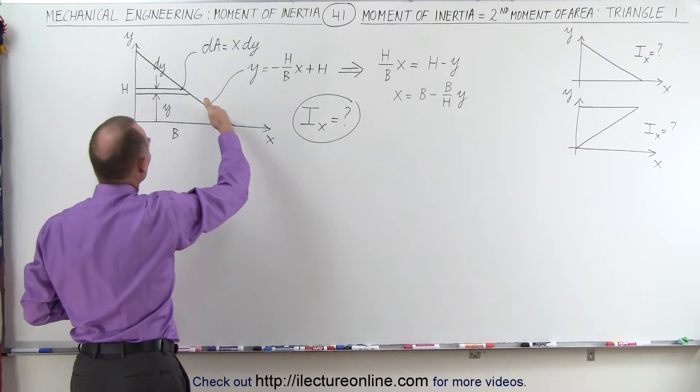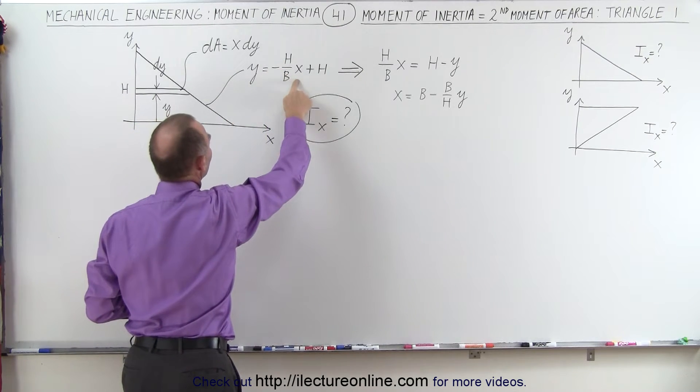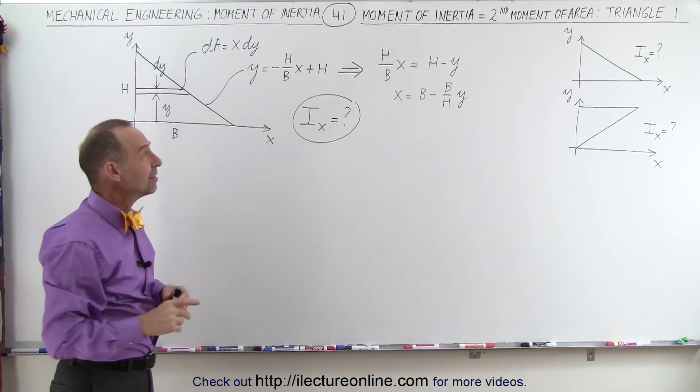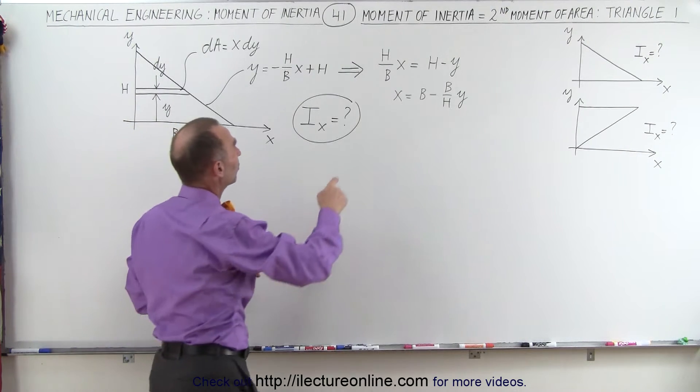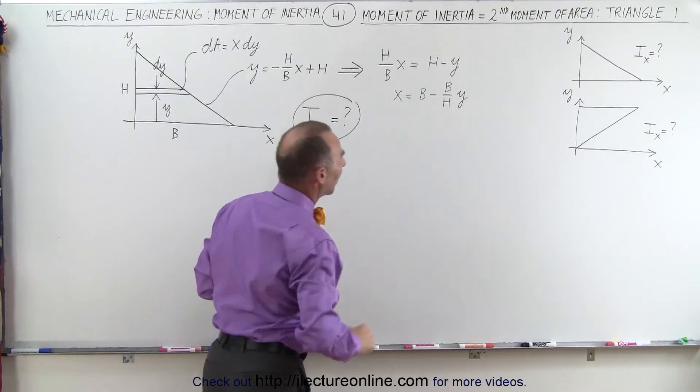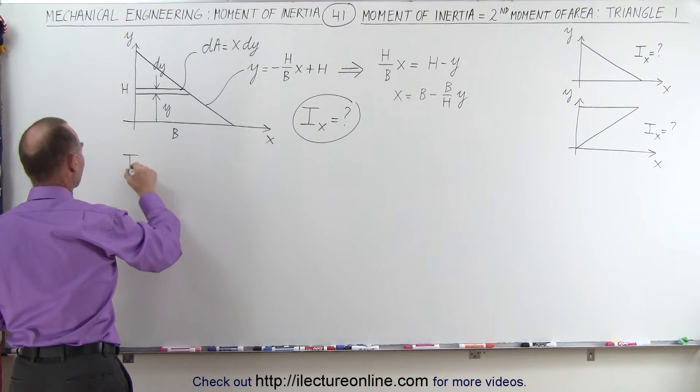going to be a minus slope, a negative rise over run, so minus h over b times x plus the y-intercept of h. We're going to need that equation solved in terms of x, so it's right here, x equals b minus b over h times y. So now we're ready to find the moment of inertia relative to the x-axis.